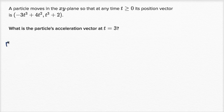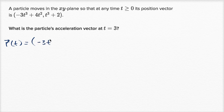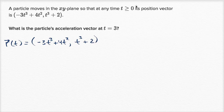So our position — let's denote it as a vector-valued function of time. They already told us that the x component is negative three t to the third power plus four t squared, and the y component is t to the third power plus two. Given any time greater than or equal to zero, we can find the corresponding x and y components. This is one form of notation for a vector.